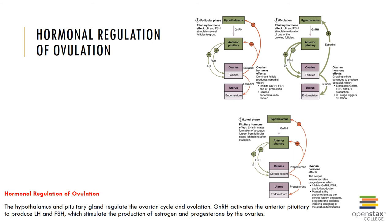In about one to two percent of all ovulations, more than one oocyte is ovulated. Ovulation marks the end of the follicular phase and the beginning of the luteal phase, which encompasses about day 15 to day 28 and involves the formation of the corpus luteum from the granulosa and thecal cells.